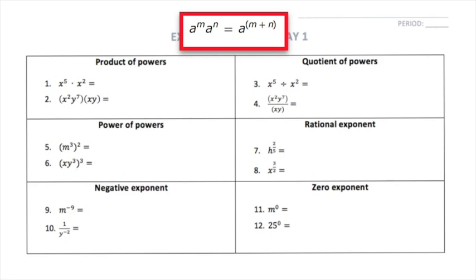The rule says to keep the same base — in this case, x — and then look at the exponents of those variables and add them. In this case, a 5 and a 2, so that will be 5 plus 2. The result of this multiplication is x to the 7th.